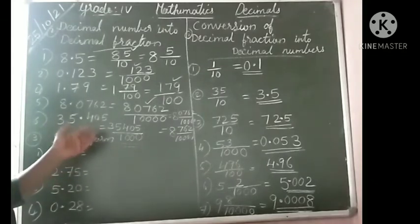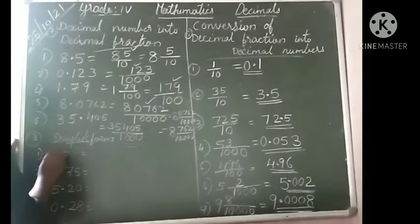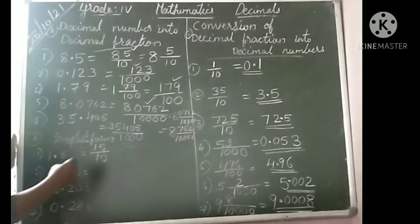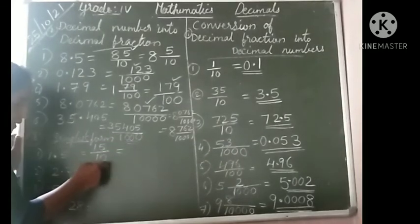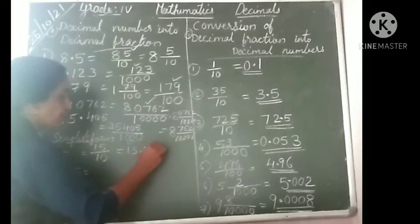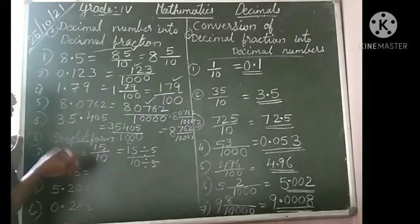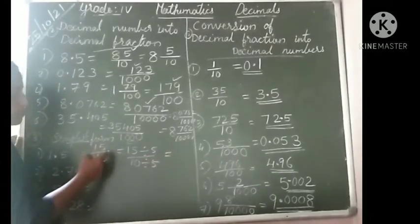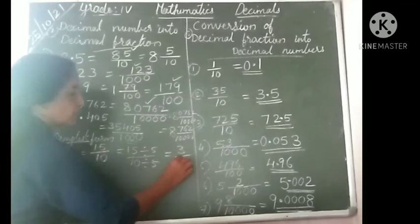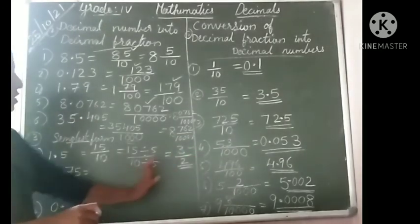Now we convert decimal numbers into decimal fraction and change into simplest form. Take 1.5. That is 15 divided by 10. This is not in simplest form. Both 15 and 10 are in the 5 times table, so we divide both by 5. 15 divided by 5 is 3, and 10 divided by 5 is 2. So the answer in simplest form is 3 by 2.